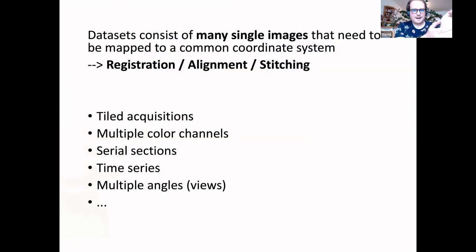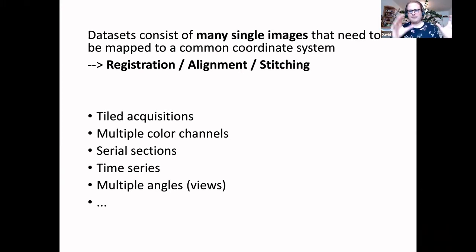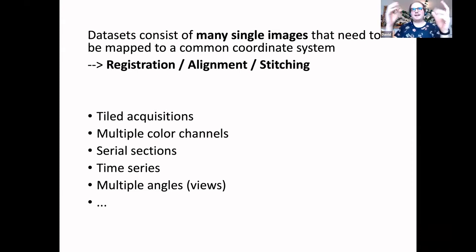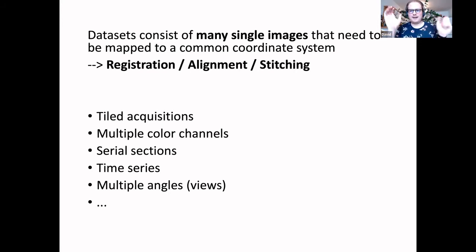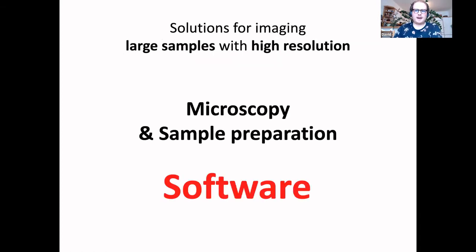All these examples have one thing in common: they consist not only of a single image, but of many, many images. For us to perform any kind of downstream analysis on them, we first need to take all of the images and map them to a common coordinate system. This is the task we want to solve with image registration, image alignment, or stitching — and it is typically a software task.